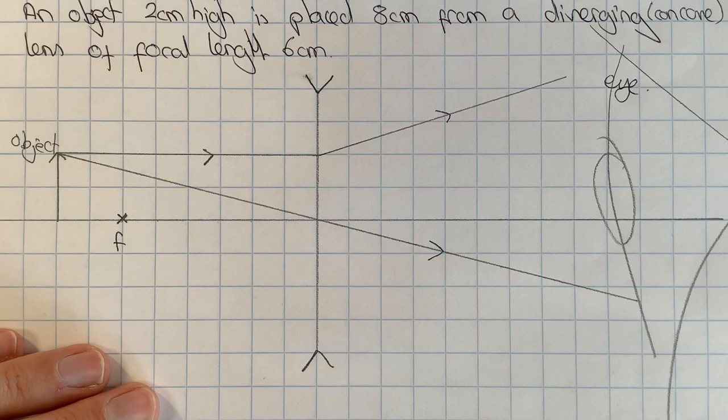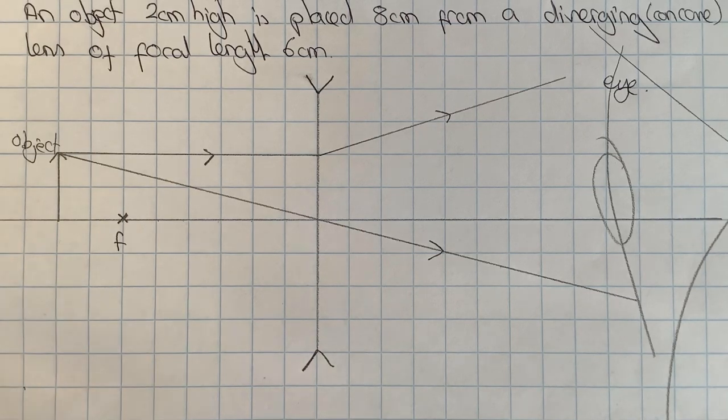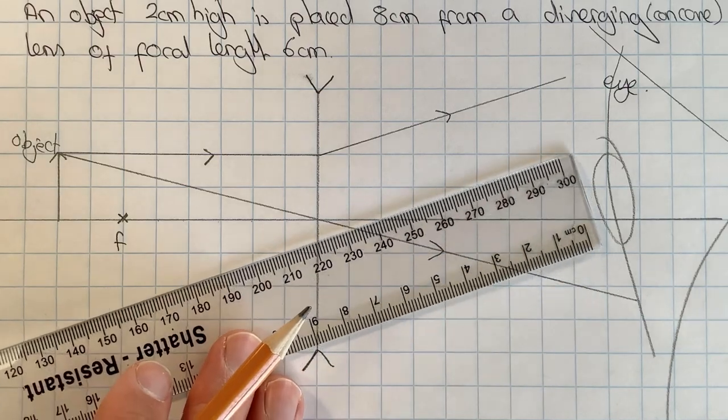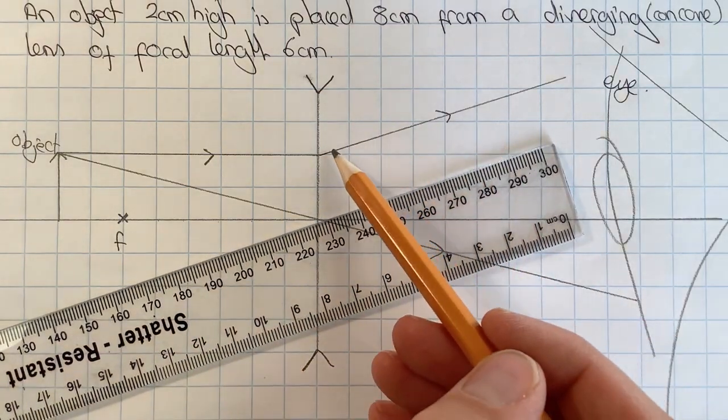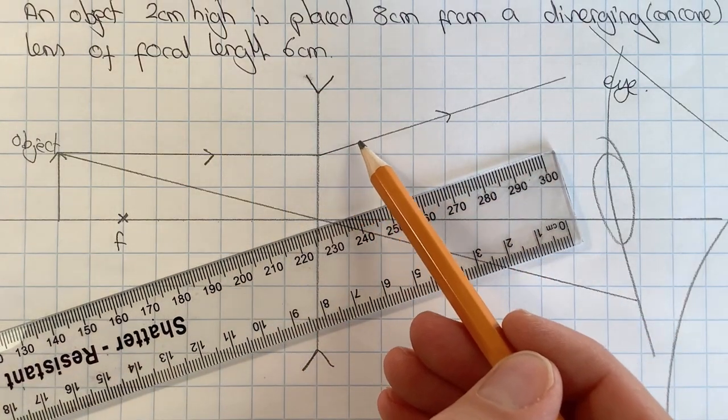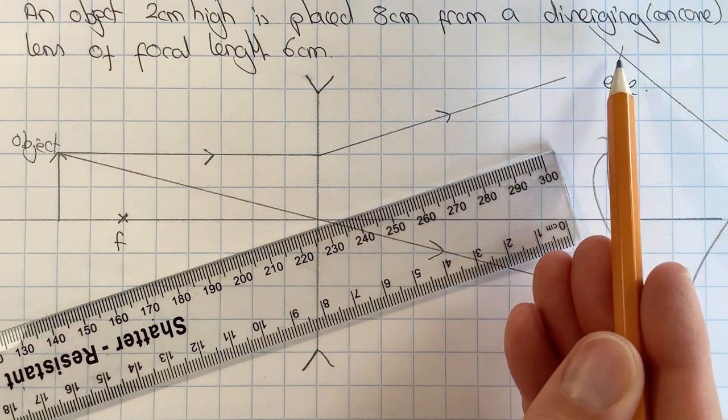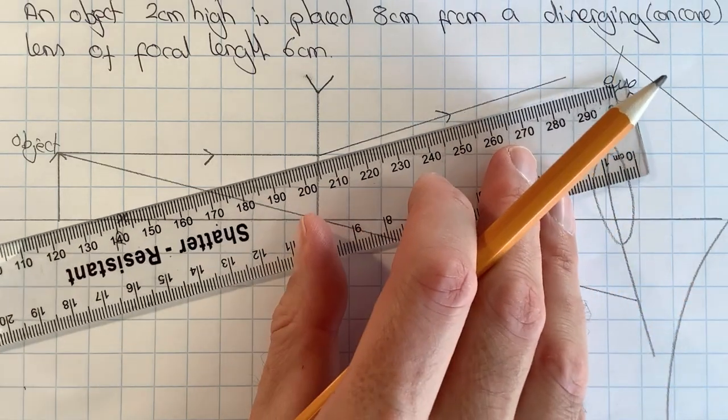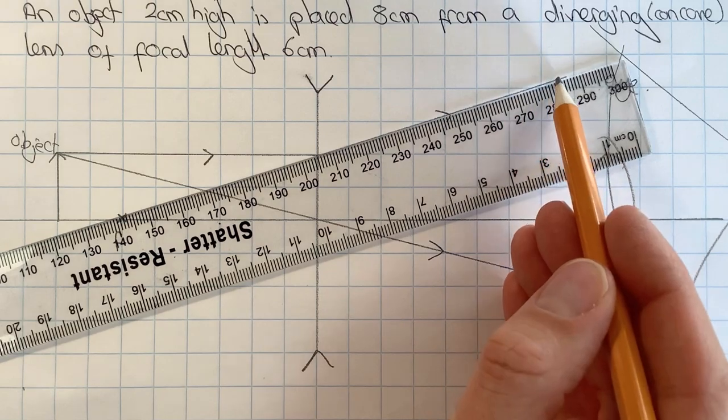Now I am going to need to add in some virtual rays to see where the image forms. In fact I only need to add in one virtual ray. Remember that our brain is a little bit stupid and assumes that this ray has always traveled in a straight line.